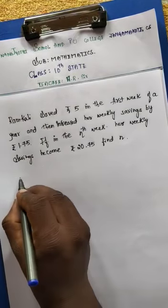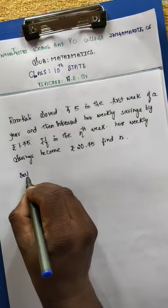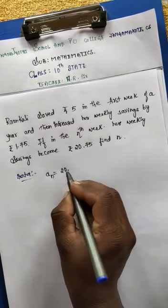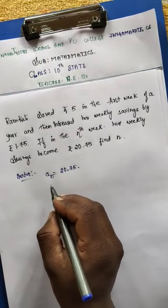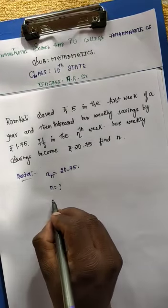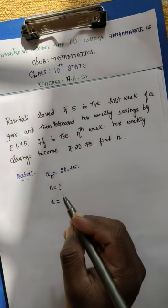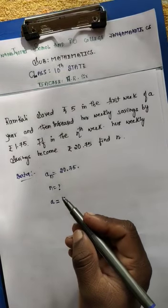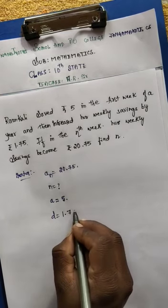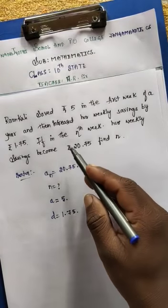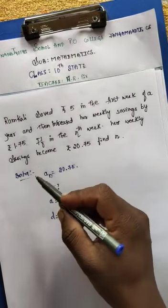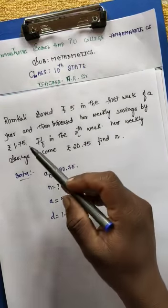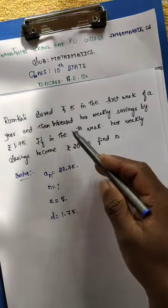So here we have the given data. aₙ is equal to rupees 20 rupee 75 paisa, and we need to find the value of n. Here a is the weekly savings. a is 5 — in the first week of a year. Then increased her weekly savings by — this is d — 1 rupee 75 paisa. If in the nth week, we need to find n: her weekly savings becomes the total number of terms. Ram Kali saved rupees 5 in the first week, that is the first term a is 5.